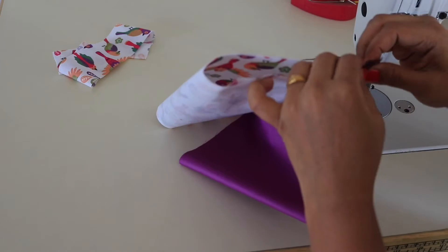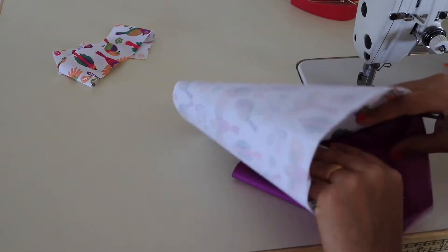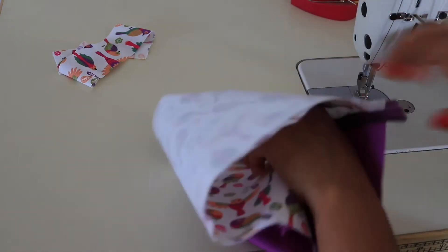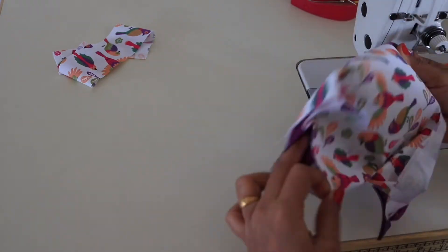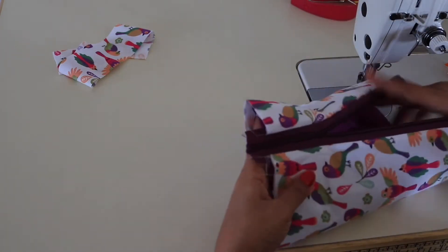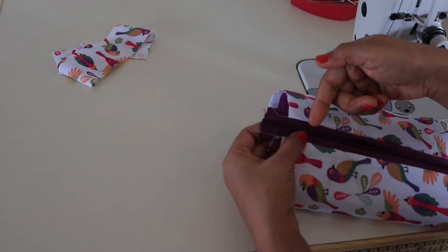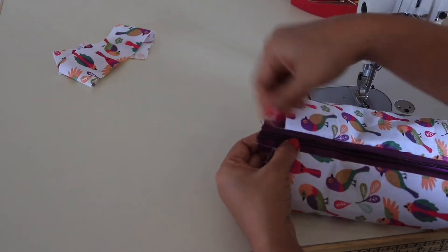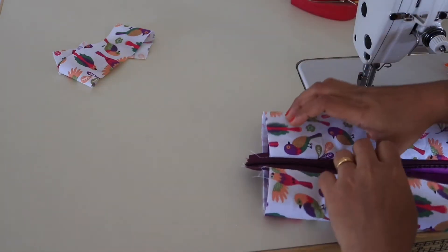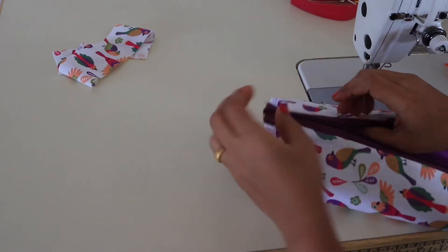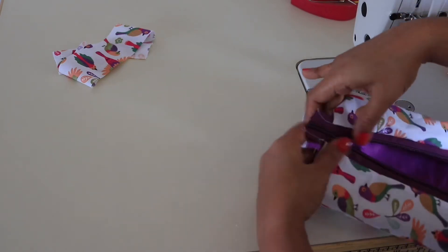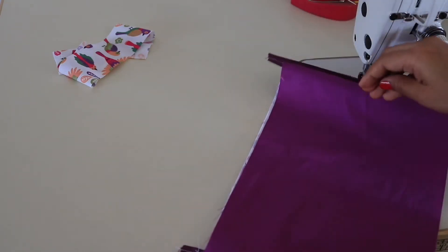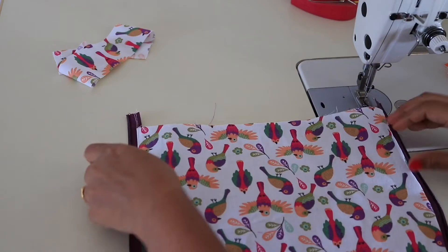Now open the zipper. You have to turn it so it will look like this. If you are using a regular zipper, the zipper pull will be here so you won't open all the way till the end. Here I am using zipper by the yard so I can open it, and that's why I like to use by the yard zippers.